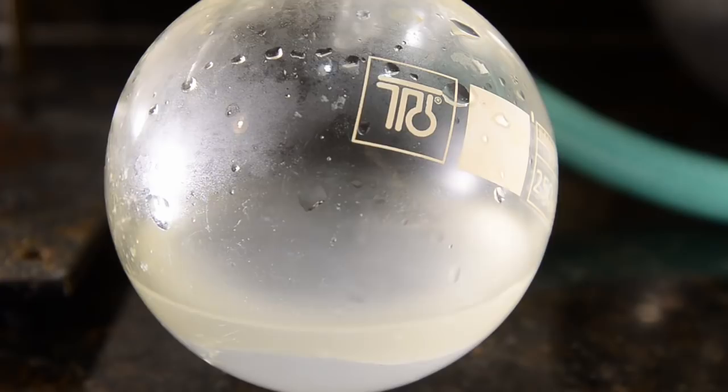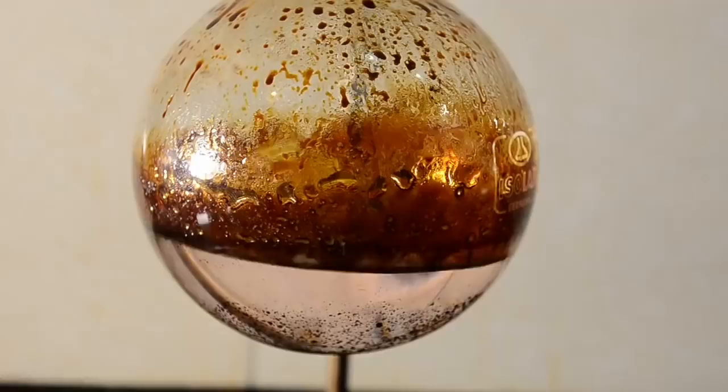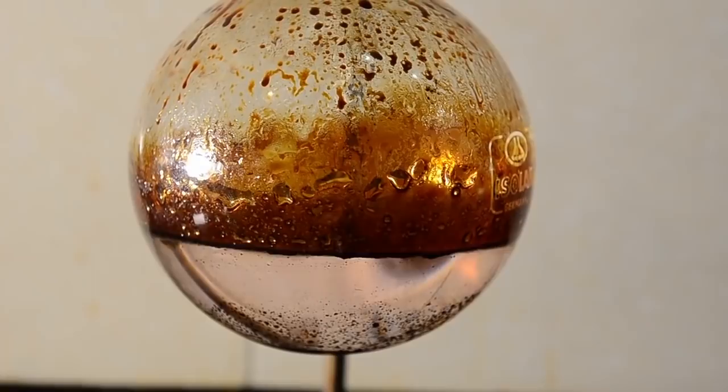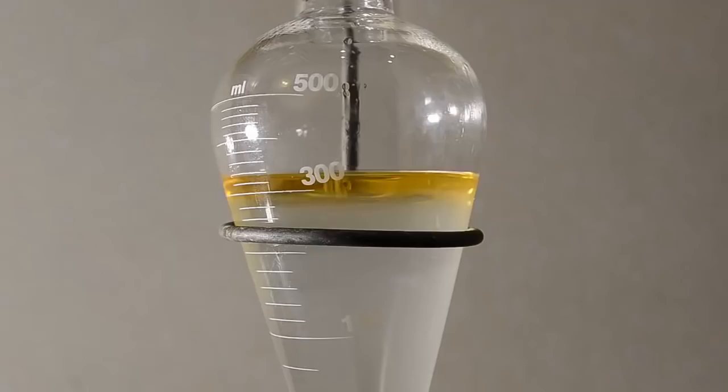At the end of the distillation, there's some brown gunk left in the boiling flask which can be removed with a little acetone. Here's the distillate we collected. Around 325 ml in total.